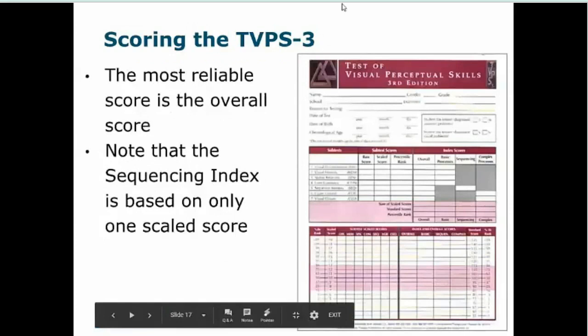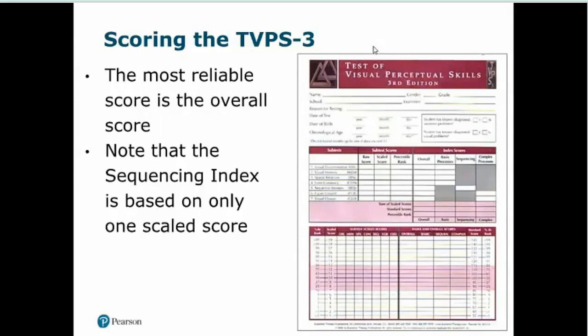The basic processes index consists of discrimination, visual memory, spatial relations, and form constancy. Sequential memory is its own standalone index with no other subtests contributing to it — worth being mindful of. The complex processes index includes figure ground and visual closure, which require more mental gymnastics and have more of a working memory component to them.